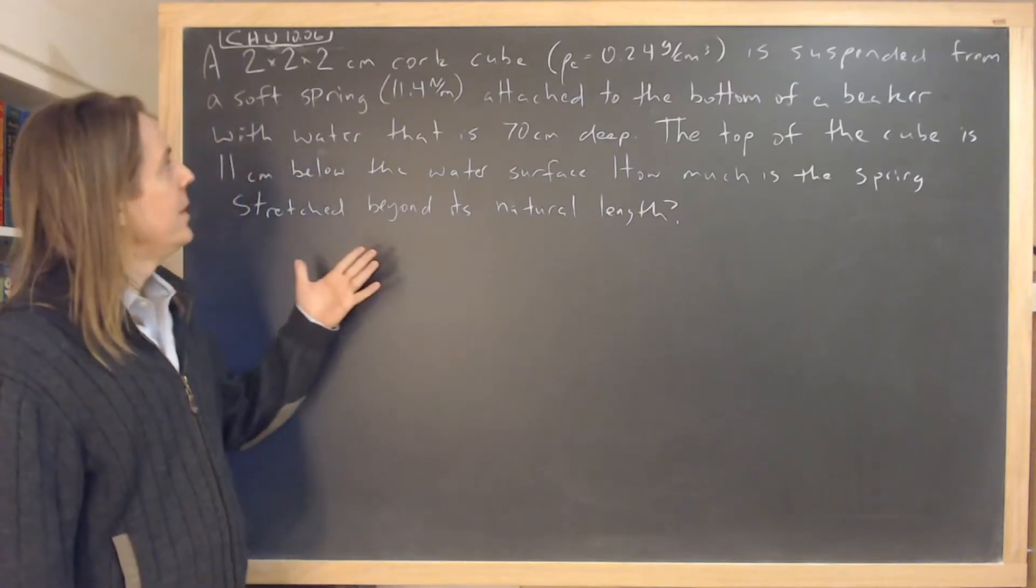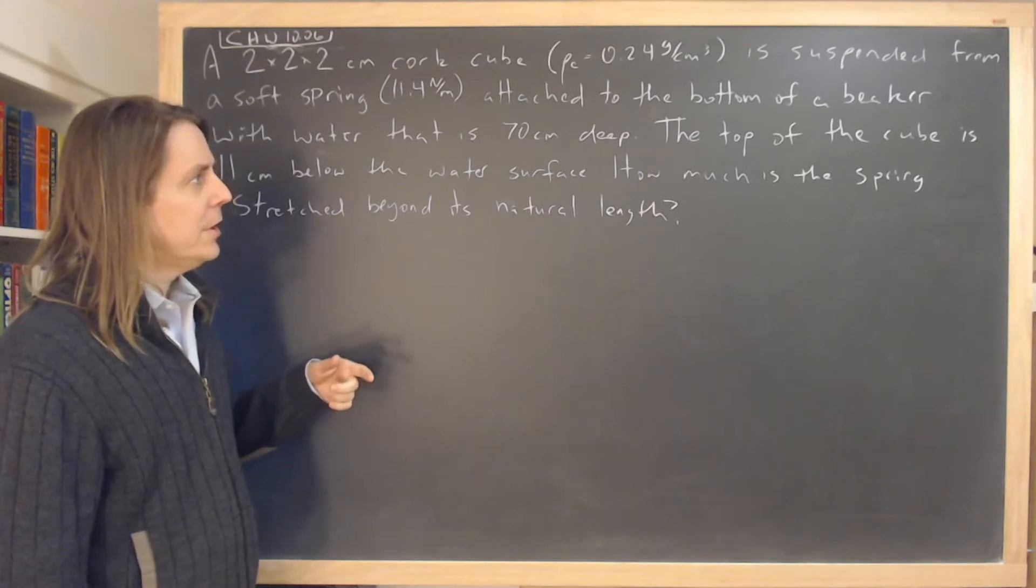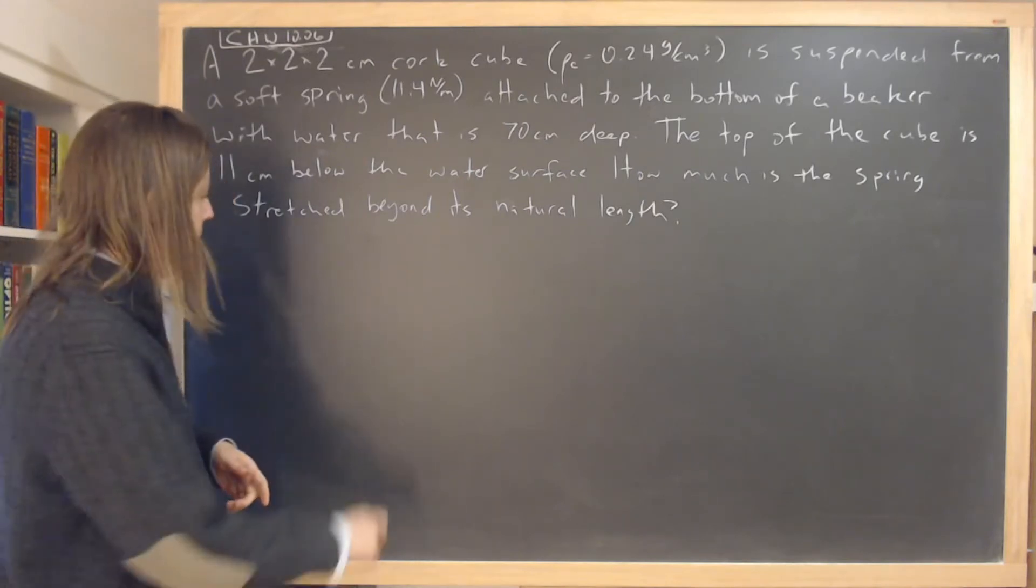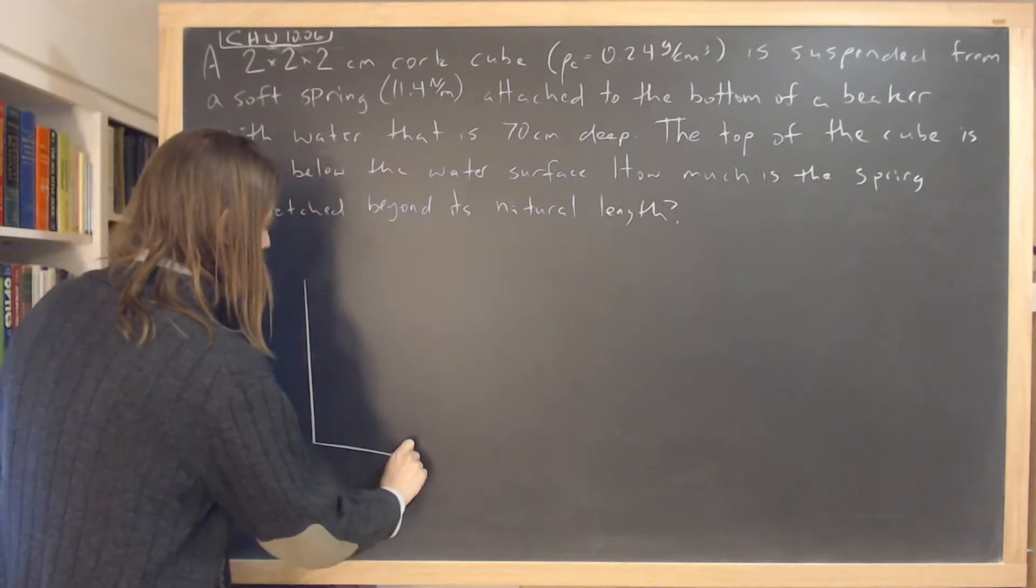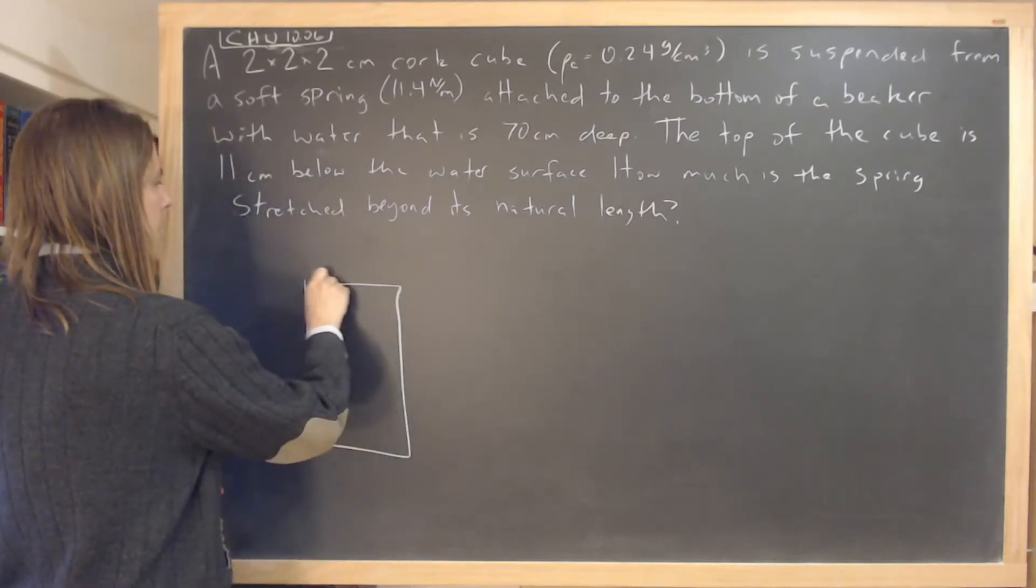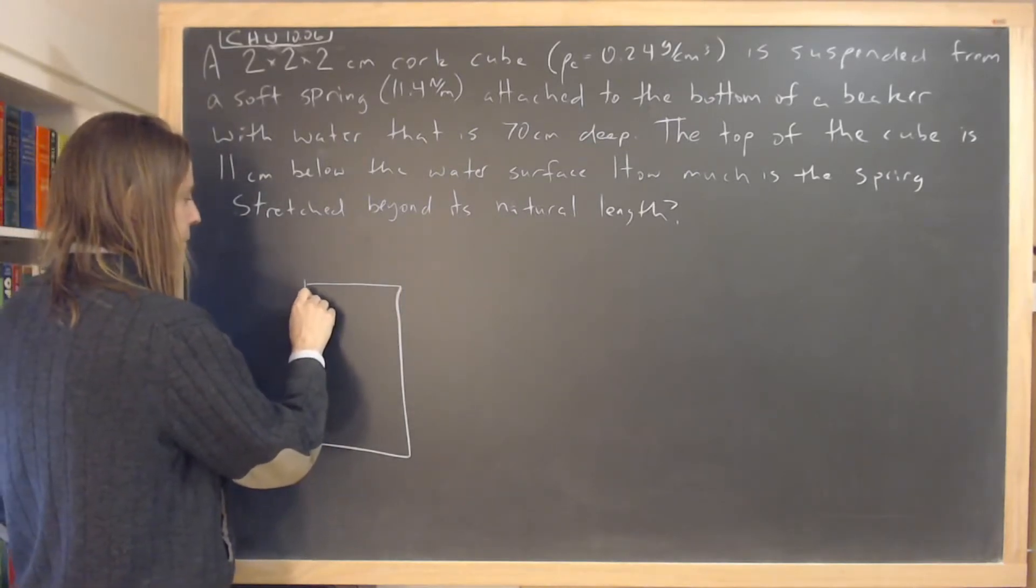In this problem we have a cork cube suspended from a soft spring at the bottom of a beaker. This is a little weird. Let's just draw it here. So here's your beaker. There's a little thing and it's full of liquid.